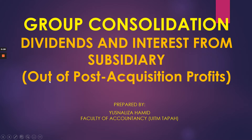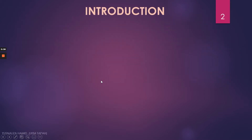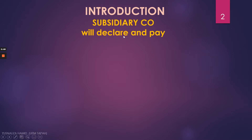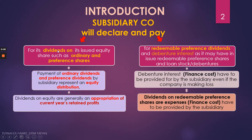These are the dividends and interests that are declared by the subsidiary company out of the post-acquisition profits. As an introduction, subsidiary company will normally declare and pay for its dividends on issued equity shares such as ordinary and preference shares, as well as declaring and paying for the redeemable preference dividend and debenture interest, if the subsidiary company also has in issue redeemable preference shares and debentures.